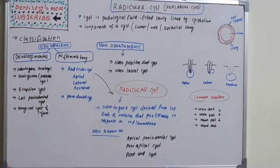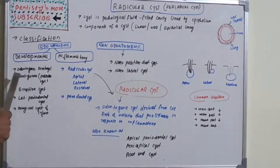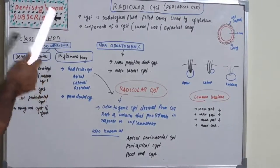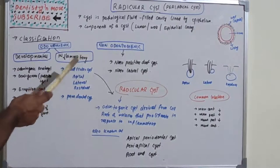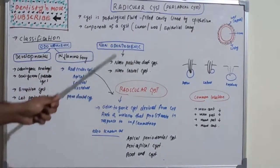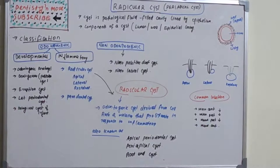Inflammatory cysts result from inflammation, while developmental cysts result from developmental problems or processes. Developmental cysts include odontogenic keratocyst, dentigerous or follicular cyst, eruption cyst, lateral periodontal cyst, and gingival cyst of infants. In inflammatory cysts, the most common is radicular cyst, with three types: apical, lateral, and residual. Another inflammatory cyst is the paradental cyst. In non-odontogenic cysts, we have nasopalatine duct cyst and nasolabial cyst.